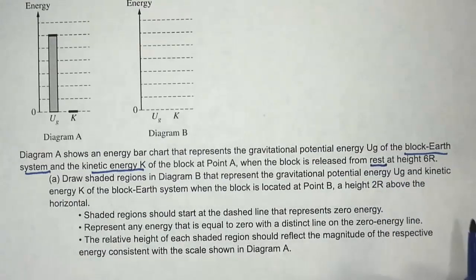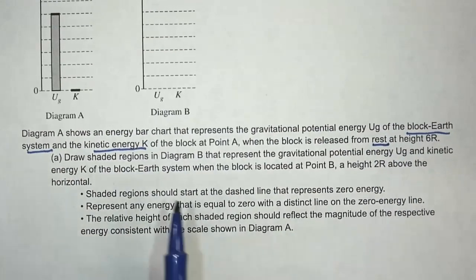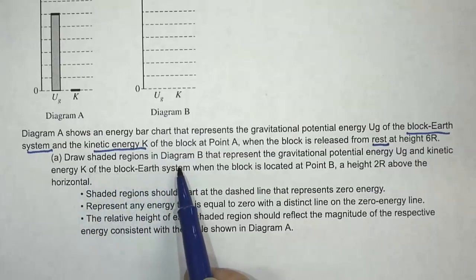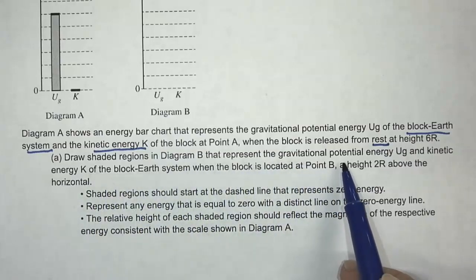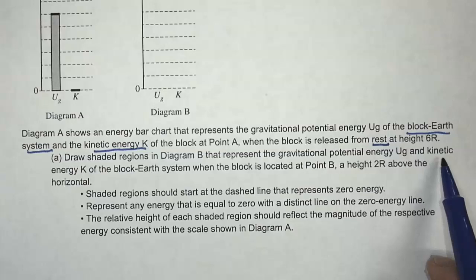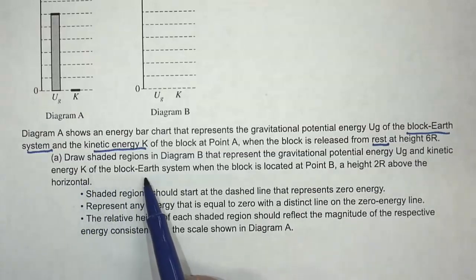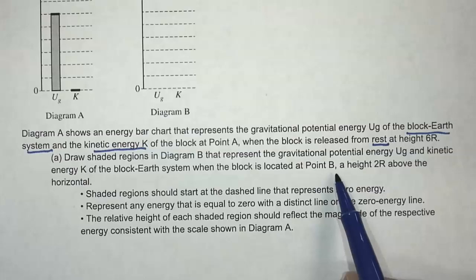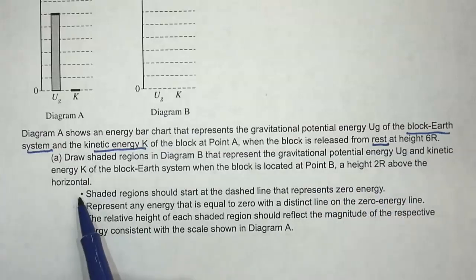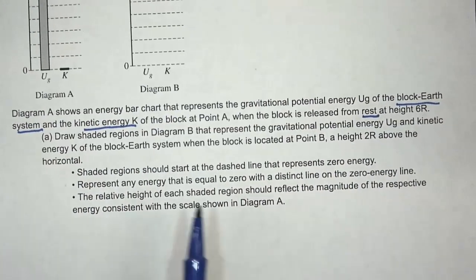So it's starting from rest, so initially there's no kinetic energy. Draw the shaded regions in diagram B that represents the gravitational potential energy Ug and kinetic energy K of the block-Earth system when the block is located at point B, a height 2R above the horizontal.